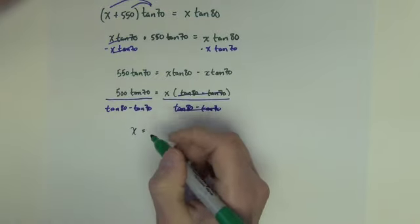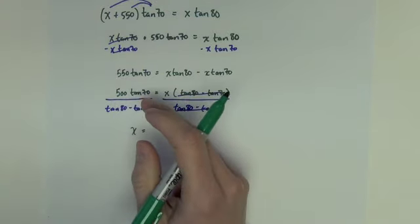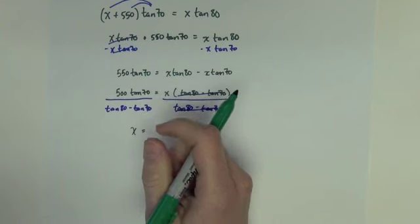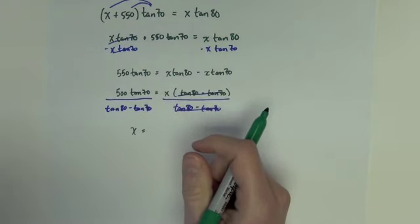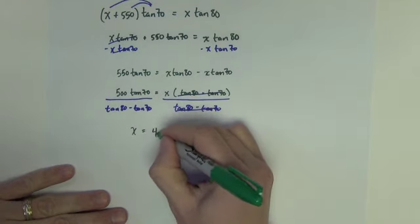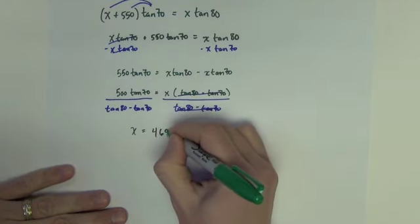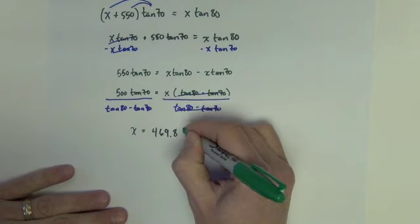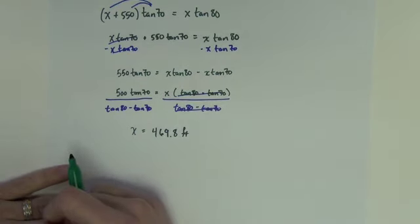I'm ready to go to the calculator now and type all this in. You do need to be a little careful on the calculator with use of parentheses all in the right spot. So just be wary of that. And if you don't get the same answer I get, then try it again with possibly more parentheses. There's my length for x. 469.8 feet.